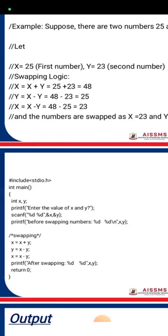For example, x = 25 and y = 23, so x = x + y gives 25 + 23 = 48. The second step: y = x - y gives 48 - 23 = 25. The third step: x = x - y gives 48 - 25 = 23. So the values are successfully swapped.